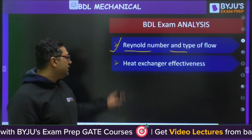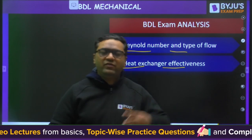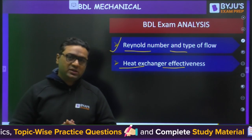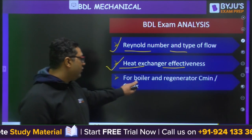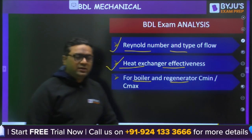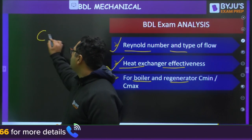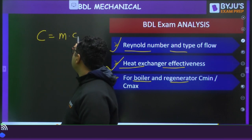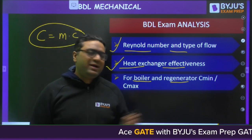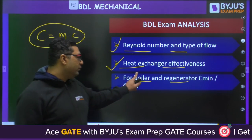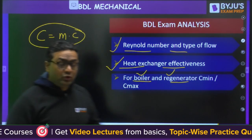A question was there from heat exchanger effectiveness — there are formulas for the effectiveness of a heat exchanger, and the question came from there. They also asked about the ratio of C_minimum to C_maximum for boilers and regenerators, where C refers to the product of mass and specific heat. There were different questions on this as told by the student.